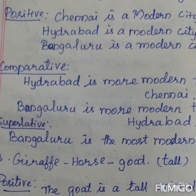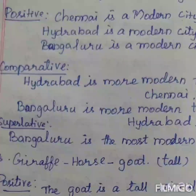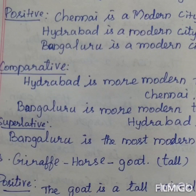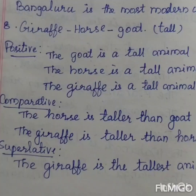Next: Chennai, Hyderabad, Bangalore — adjective is 'modern'. For positive degree: Chennai is a modern city, Hyderabad is a modern city, or Bangalore is a modern city — when we say only one city without comparing, we can write any one. For comparative degree: Hyderabad is more modern than Chennai; Bangalore is more modern than Hyderabad. For superlative degree, only one sentence: Bangalore is the most modern city.